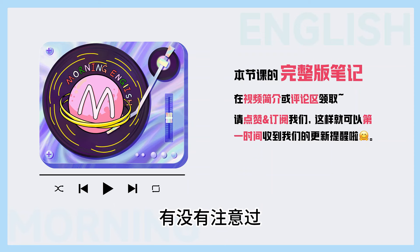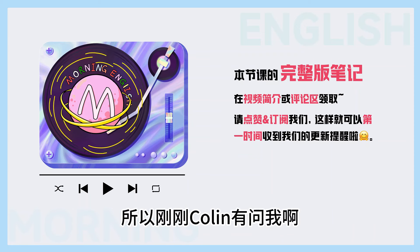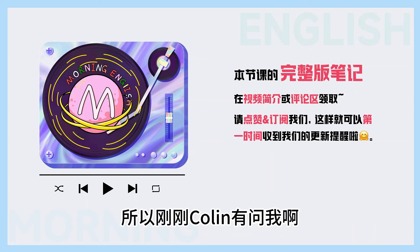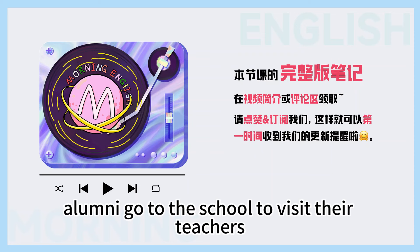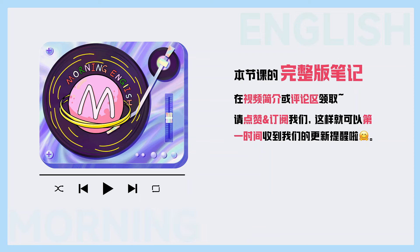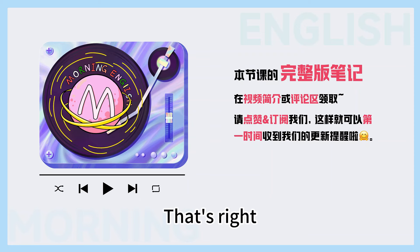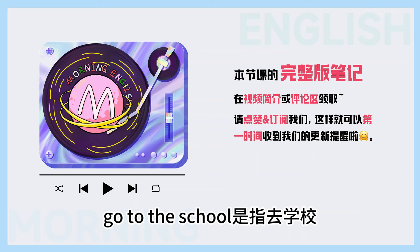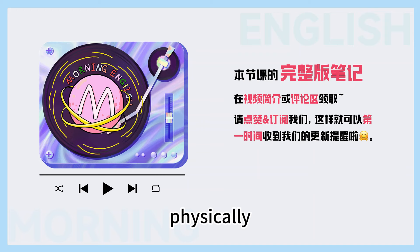大家说英文的时候，有没有注意过，go to school 和 go to the school 是有差别的。所以刚刚 Colin 有问我。Students go to school. Alumni go to the school to visit their teachers. Go to school 是去上学。Go to the school 是指去学校，去一趟这个学校。Physically, yeah.